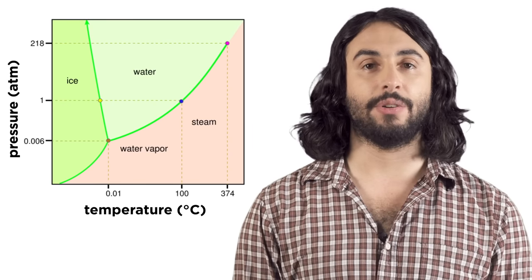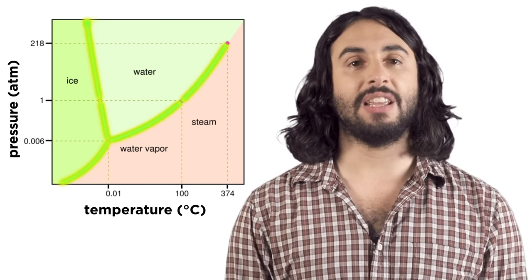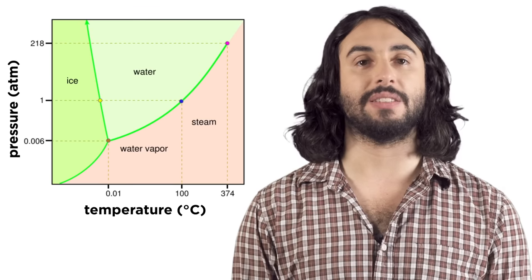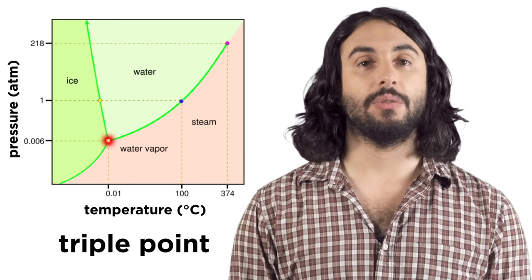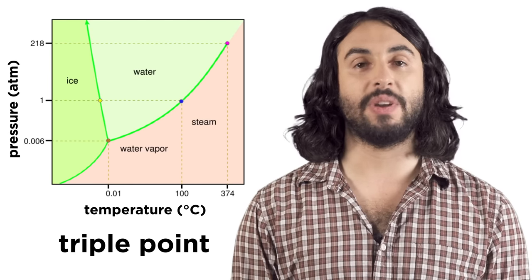On a phase diagram, lines represent equilibria between two phases, and the triple point represents an equilibrium between all three.